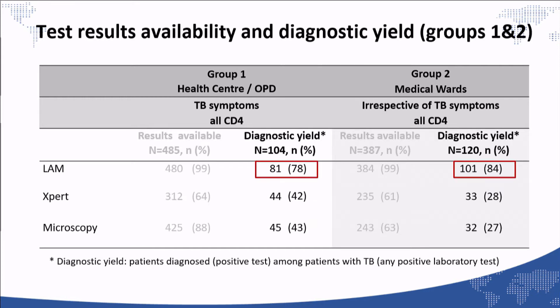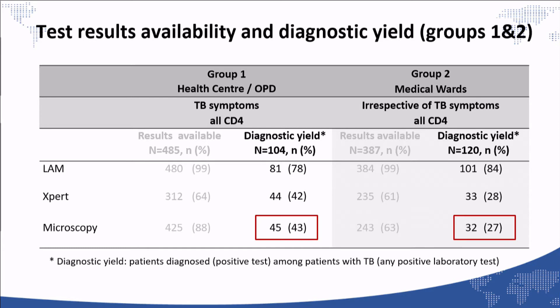This had a direct impact on the diagnostic yield of these tools. In this study, diagnostic yield was defined as patients diagnosed through a tool — with a positive result — among patients with TB defined as any positive laboratory test. We found that 80% of patients with TB were diagnosed through LAM, because almost all patients had a LAM test performed. Despite the poor sensitivity, a large number of patients could be diagnosed through LAM. In contrast, lower proportions were diagnosed through Xpert and microscopy, as many patients lacked results from those tests, and microscopy also has poor sensitivity.